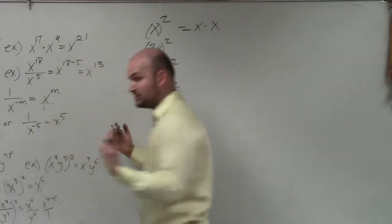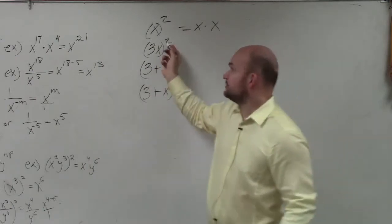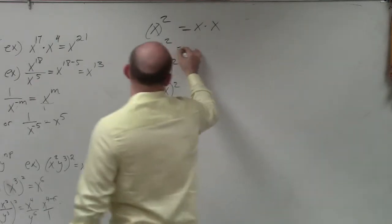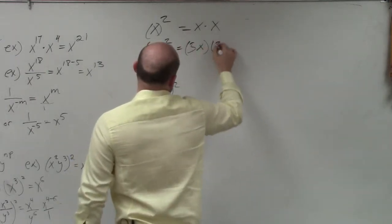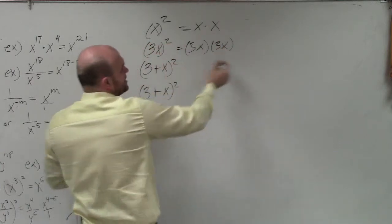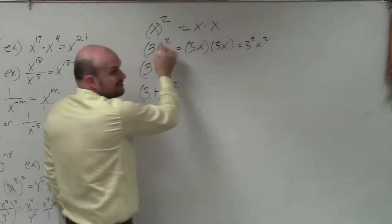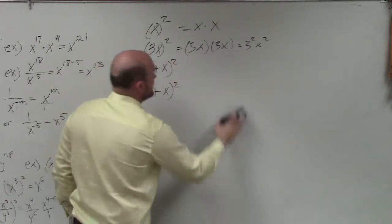So 3x squared, which we just talked about. You could obviously distribute that, right? But really, that is 3x times 3x, which remember what we just talked about, which is really 3 squared x squared, right? Distribute those, but whatever. That's not what we're talking about right now.